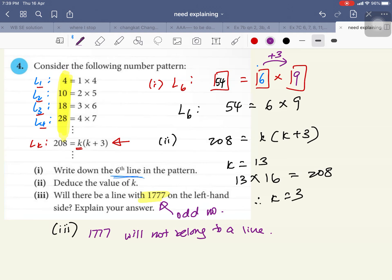Now, explain your answer. So, my explanation will be all the numbers on the left-hand side are even numbers but 1777 is odd. So, this will be my explanation. Thank you.